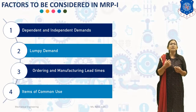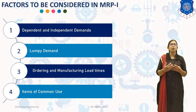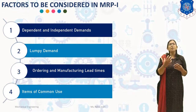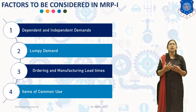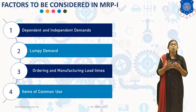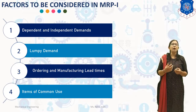The last factor is item of common use. In manufacturing, a single raw material may be used to produce more than one type of component. Again, a single component may be used in one or more than one final product. For example, the same alloy-steel raw material may be used for different components. Similarly, an M10 bolt group may be used on a number of products. MRP-1 is used as an effective tool in planning the procurement of such commonly used items.